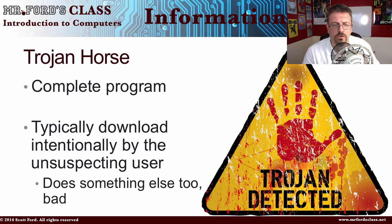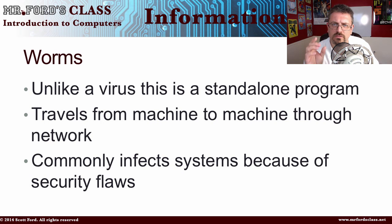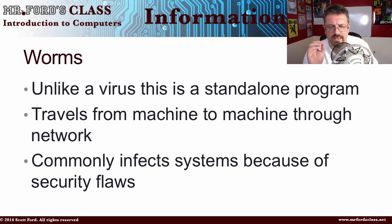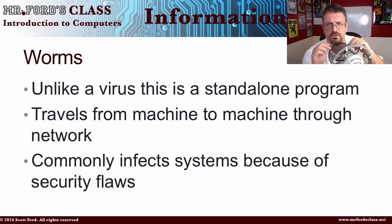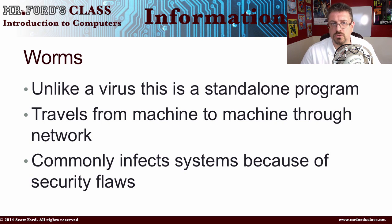The next one is a worm. Unlike a virus, which has to attach to an existing program, a worm is a standalone program. They can travel from machine to machine through networks, and what we see is that infection numbers can be staggering — 50,000, 100,000, 200,000. You can see a ton of new infections fairly quickly because these things self-replicate. They are standalone and don't need any help to infect other systems.